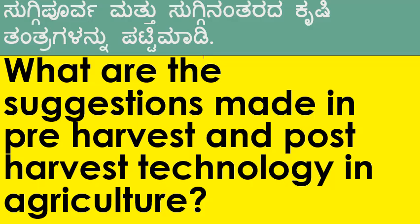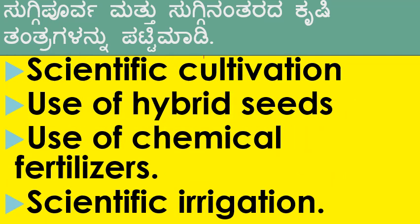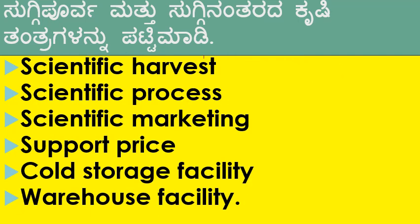What are the suggestions made in pre-harvest and post-harvest technology in agriculture as per M.S. Swaminathan? Pre-harvest: scientific cultivation, use of hybrid seeds, use of chemical fertilizers and scientific irrigation. Post-harvest: scientific harvest, processing, marketing are required. Support price, warehouse and cold storage facility will also help the farmers.